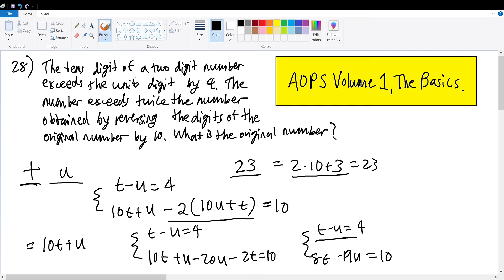We can multiply 8 on both sides of the first equation to get 8t minus 8u equals 32. Then we have 8t minus 19u equals 10. We subtract both equations to get 11u equals 22. Thus, u must equal 2, so the unit's digit is 2.